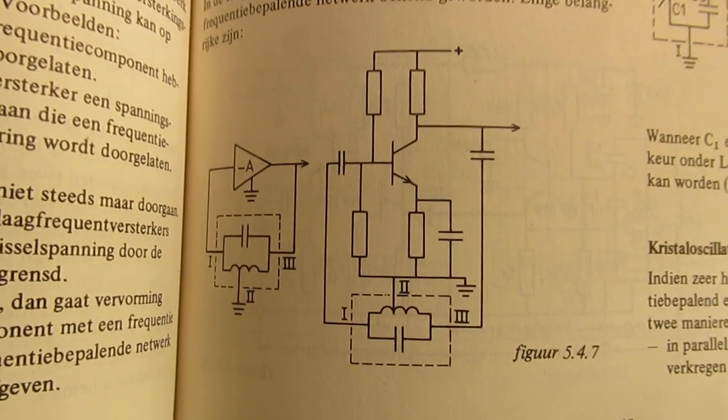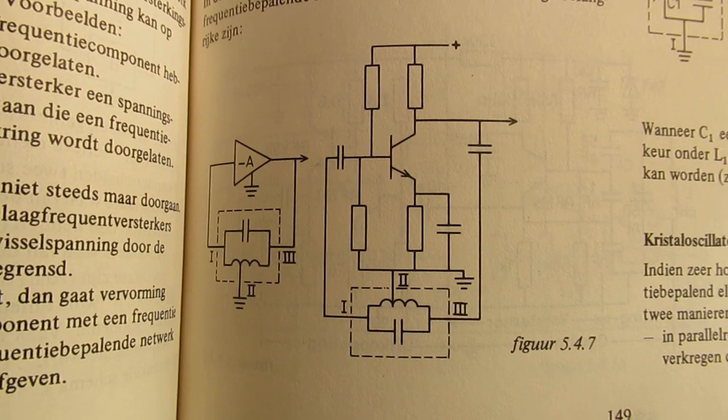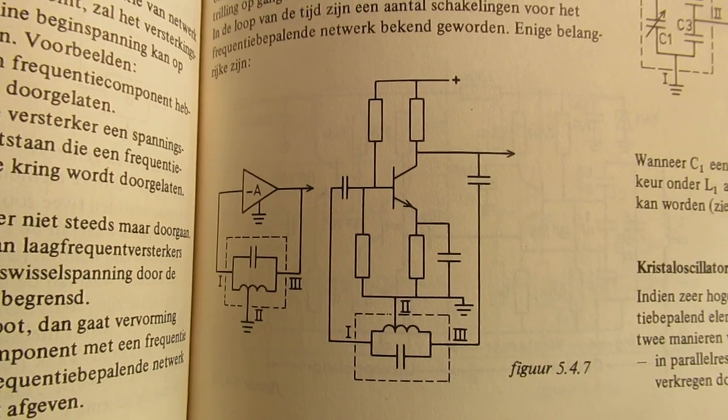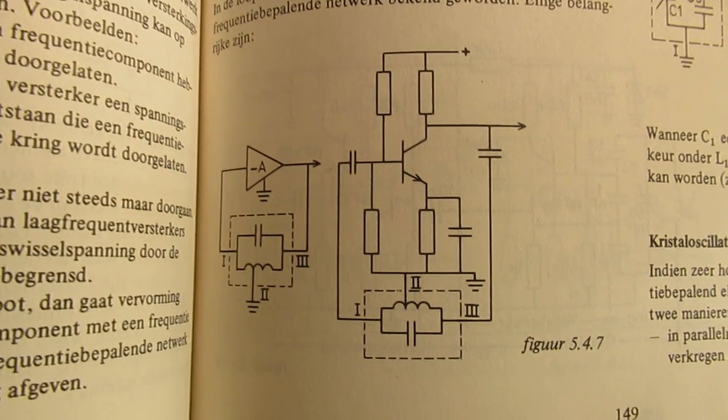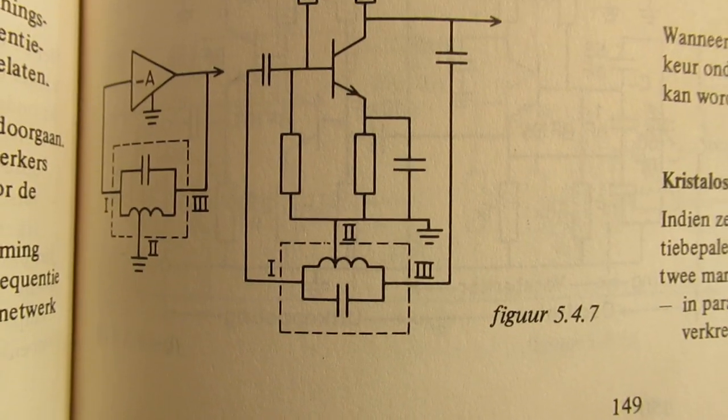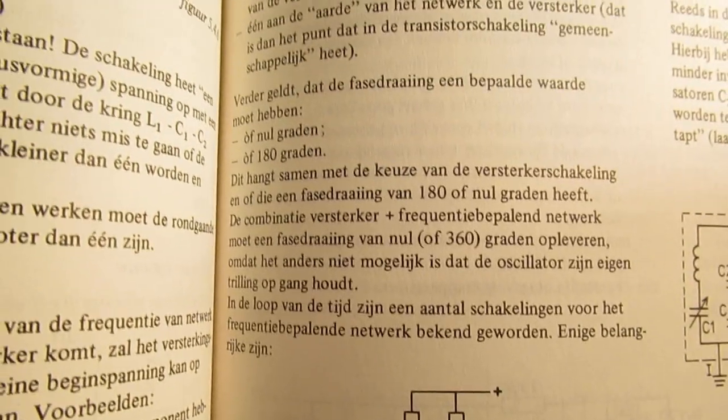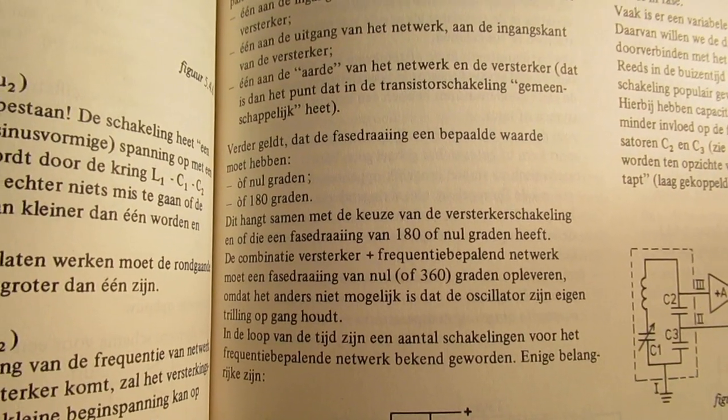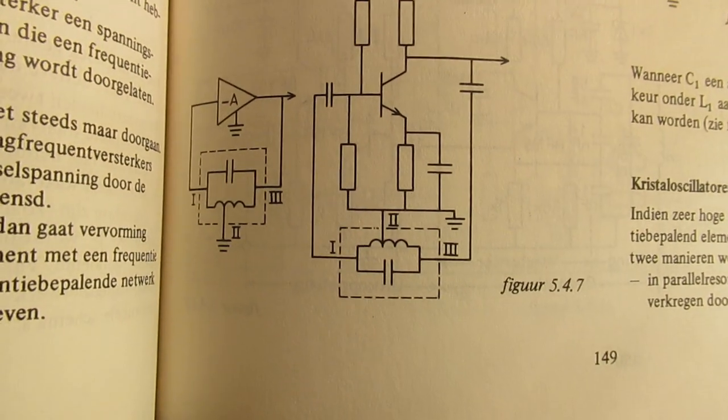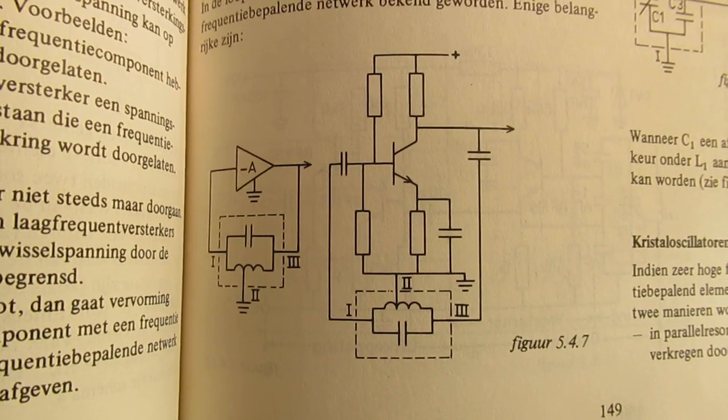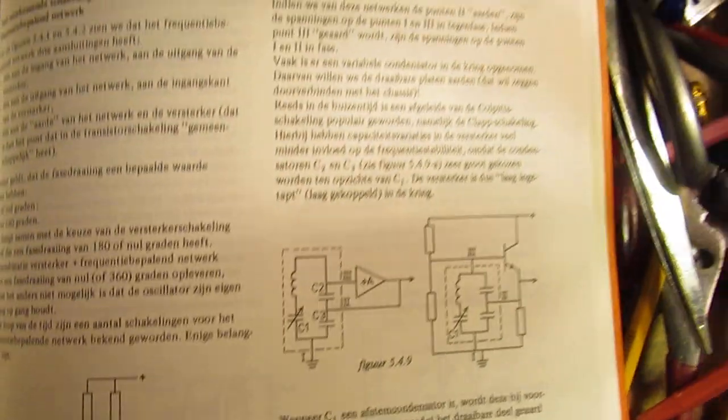And here there are a few interesting things that they tell about oscillators. This is the first schematic of an oscillator. And in fact we see here an amplifier. Could be a high frequency amplifier when you use a high frequency transistor. And here is the part that makes the circuit oscillate. Has everything to do with the phase of the output signal that is sent back to the input signal.